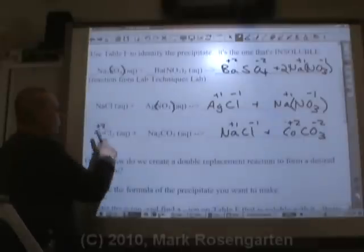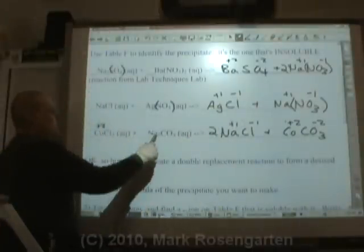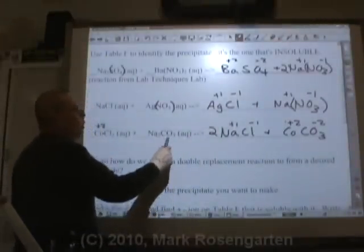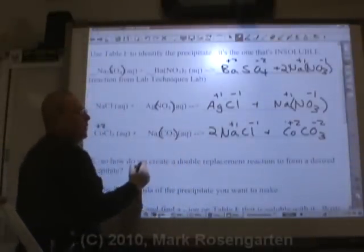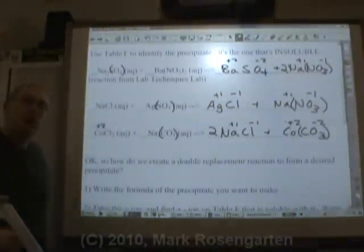Let's balance it. One cobalt, one cobalt. Two chlorines, one chlorine. Two sodiums, two sodiums. One carbonate, if you prefer doing it that way. One carbonate on both sides. It's now completely balanced.